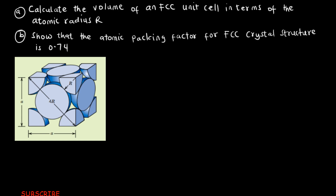In this lesson I'm going to solve two questions. Part A says: calculate the volume of an FCC unit cell in terms of the atomic radius R. Part B says: show that the atomic packing factor for FCC crystal structure is 0.74. The figure on the screen is a picture of how an FCC unit cell looks, and we are going to use this figure to answer these two questions.